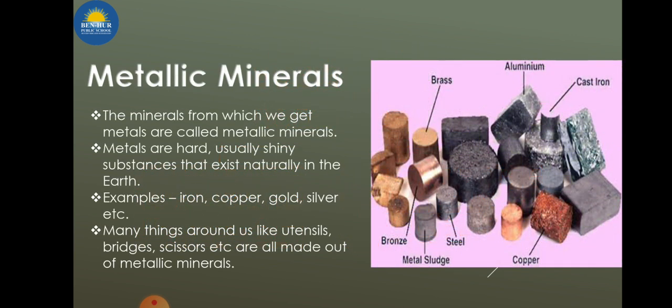Metallic minerals are those from which we get metals. Metallic minerals are usually shiny and are hard substances that exist naturally in the earth, like iron, copper, gold, silver, and many more. Many things around us like utensils, bridges, and scissors are made up of metallic minerals.